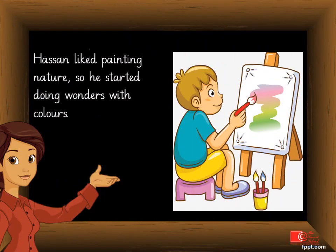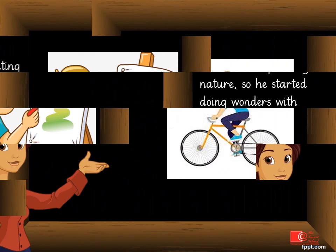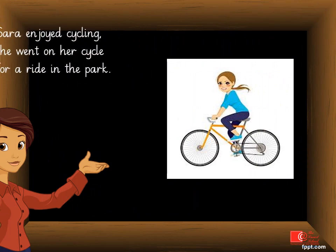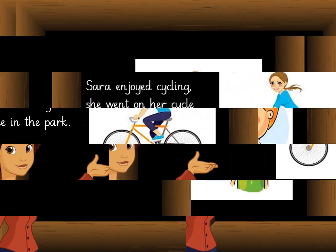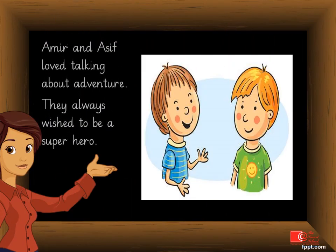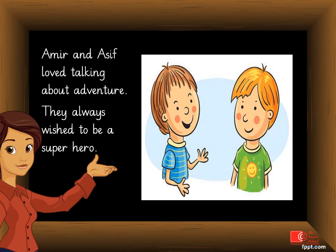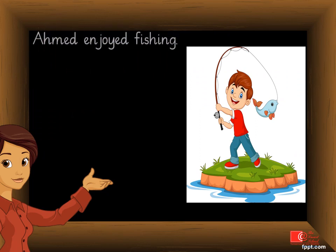Hasan liked painting nature, so he started doing wonders with colors. He looked so excited. Sara enjoyed cycling. She went on her cycle for a ride in the park. Aamir and Asif loved talking about adventure. They always wished to be a superhero.